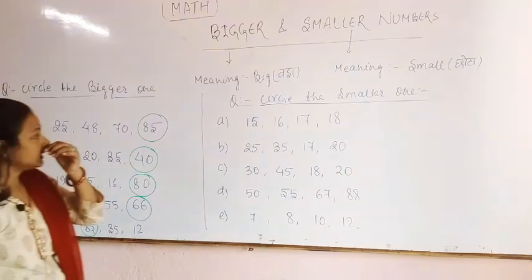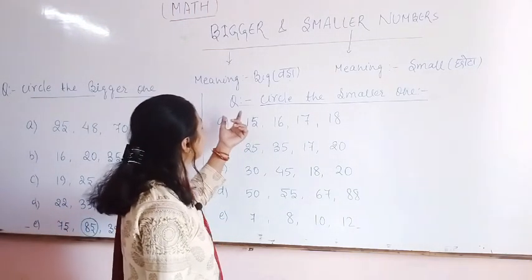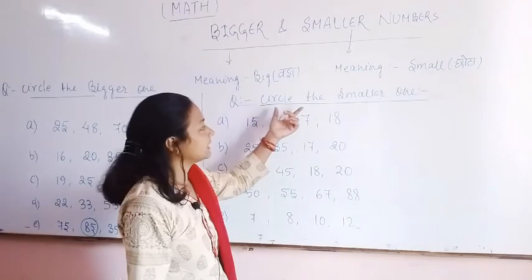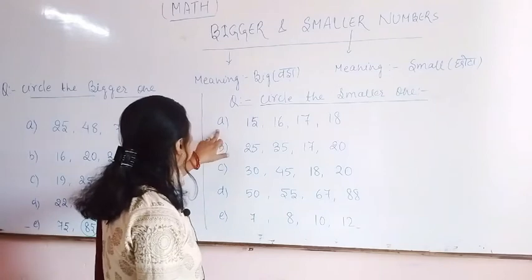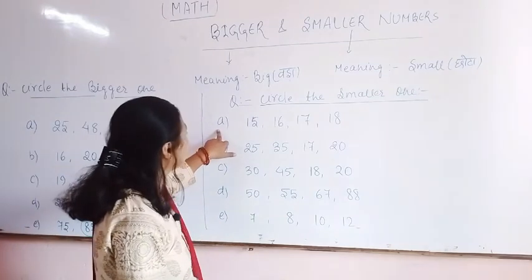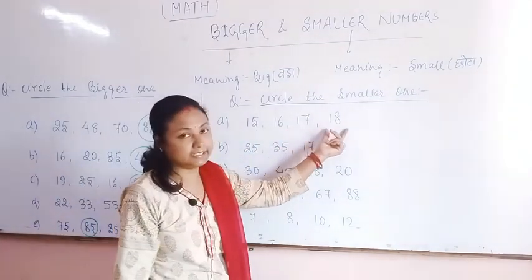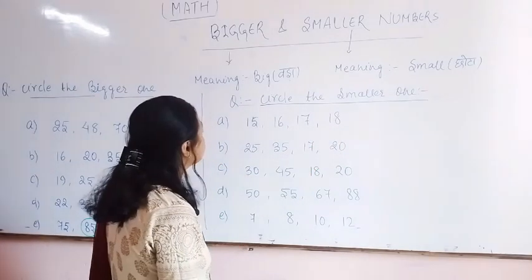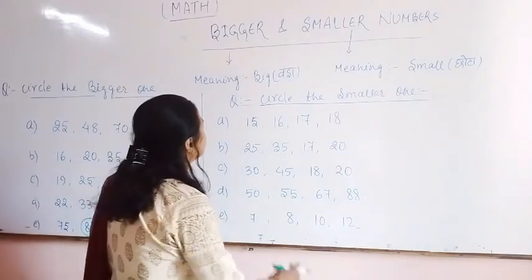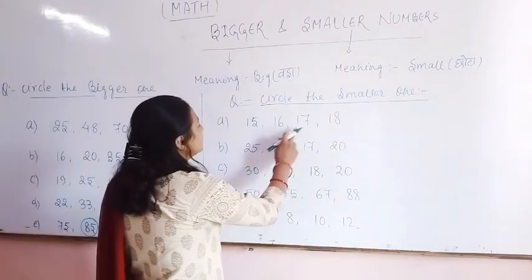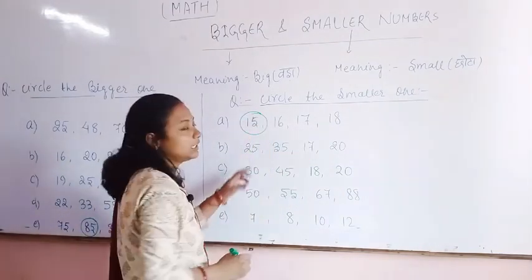Now we come to the smaller one. The question related to the smaller one — circle the smaller one. Question number 1 is: 15, 16, 17, and 18. Which one is the smaller one? 15 is the smaller one.